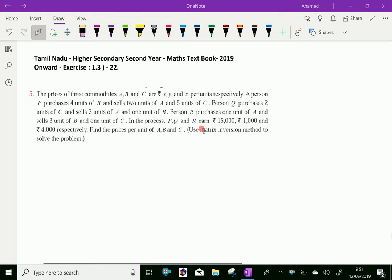P, Q and R earns rupees 15,000, rupees 1,000 and rupees 4,000 respectively. Find the prices per unit of A, B and C. Use matrix inversion method to solve the problem.